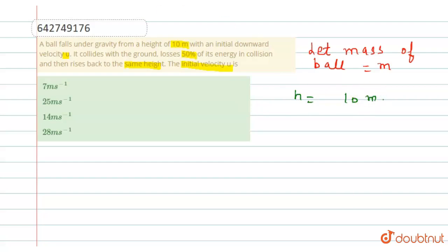Now find the total initial energy, which is equal to sum of kinetic energy plus potential energy: 1/2 m u² + mgh.